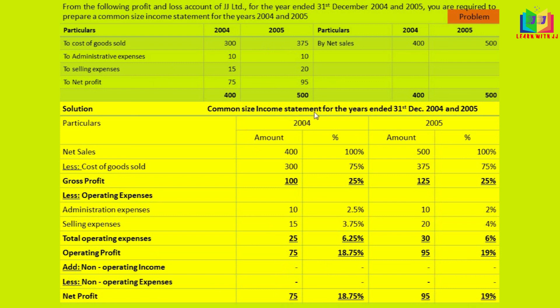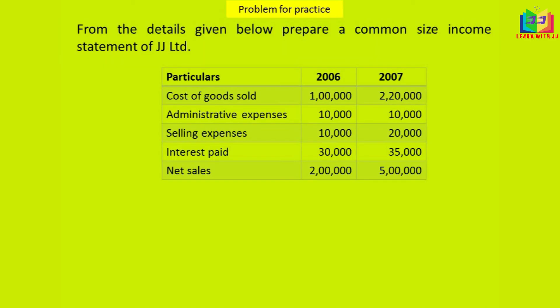Now you know how to prepare the common-size income statement. We have to convert all items into percentages in this manner. Let's take a small practice problem — you can answer it in the comment section with the correct answer. Thank you for your patience listening. See you next time!